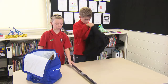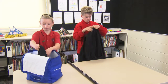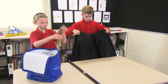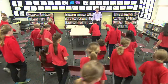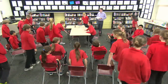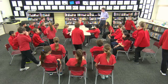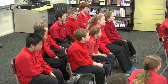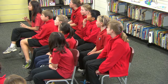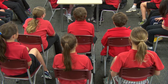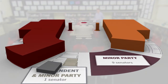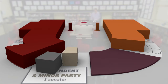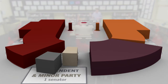Preparing some costumes and props will help your students get into role. Transform the classroom into the Senate. Move the chairs into a horseshoe shape with a table at one end. You can now sort the class into government and opposition teams and independents and minor parties. Make sure that the ratio of members in your chamber compares to the real Senate. Refer to Parliament now on the PEO website for the current numbers in the Senate.